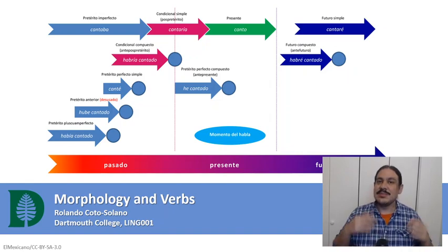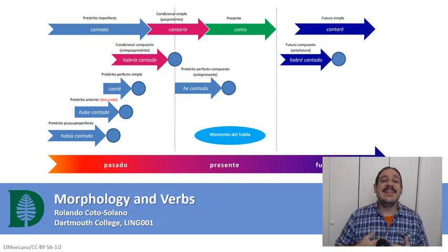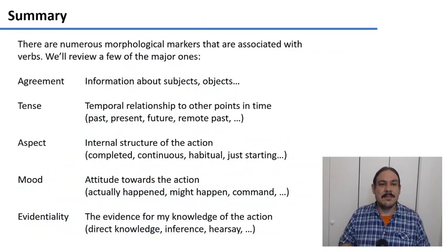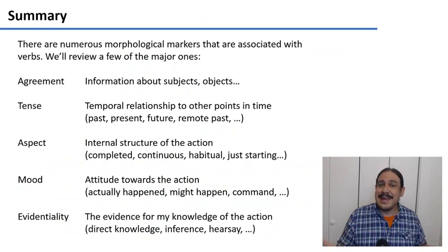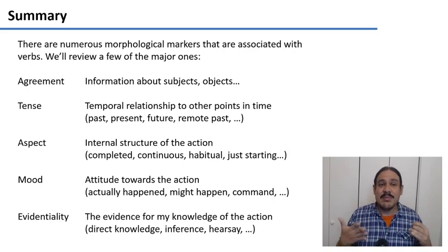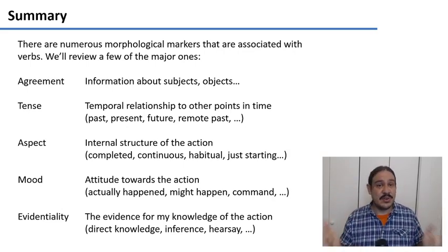In the last video, we looked at some common morphemes that usually accompany nouns. In this video, we will do the same with verbs. There's no possible way that we could cover them all, because there's a lot of things that verbs do in human languages, but we'll look at some major types of morphemes that attach to verbs.